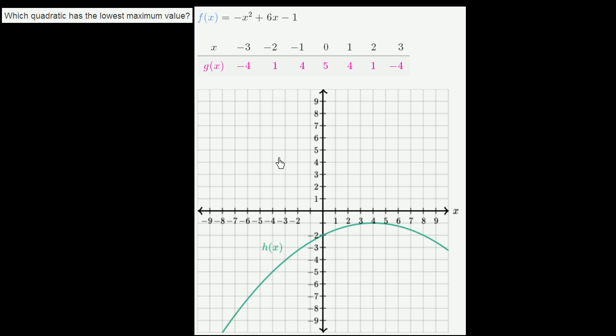I'll start with the easiest. For h(x), we can just graphically look at it and say, what's the maximum point? The maximum point looks like it's right here when x equals 4. And when x equals 4, h(x) equals -1. So the maximum for h(x) is -1.